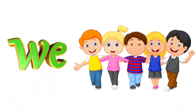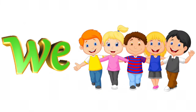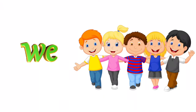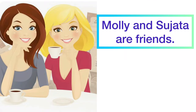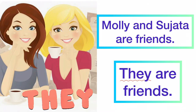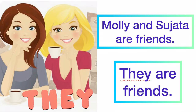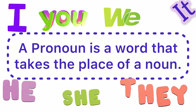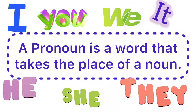'We' is non-gendered and does not specify quantity — it doesn't matter who is in the group or how large it is, as long as there are two or more people. Let's try another plural pronoun: Molly and Sujata are friends. Replacing the two nouns, our new sentence is: they are friends. 'They' is a pronoun because it replaces the nouns Molly and Sujata. To review: a pronoun is a word that takes the place of a noun.